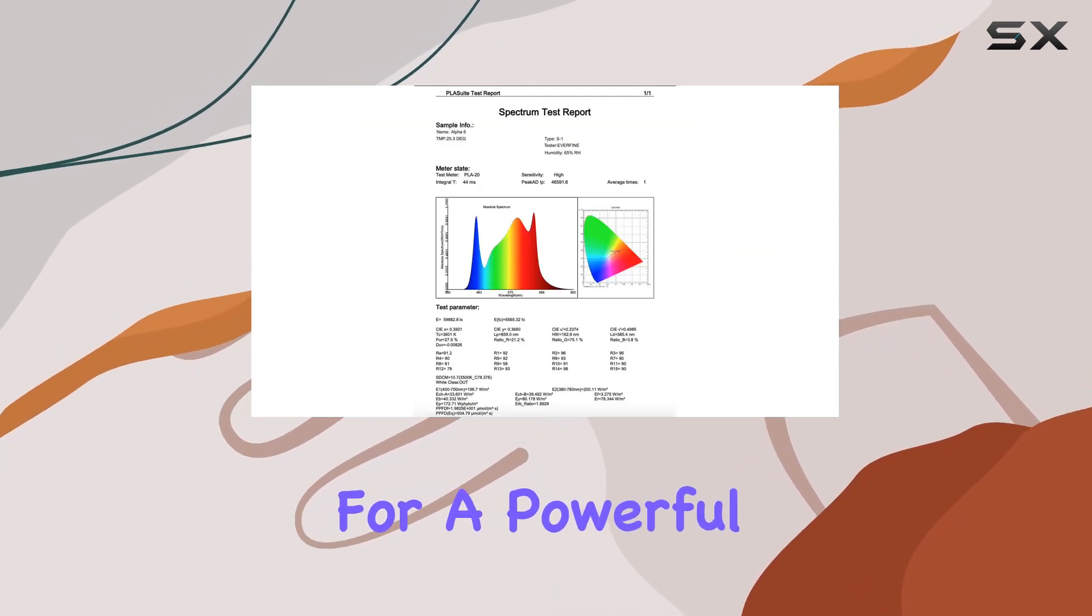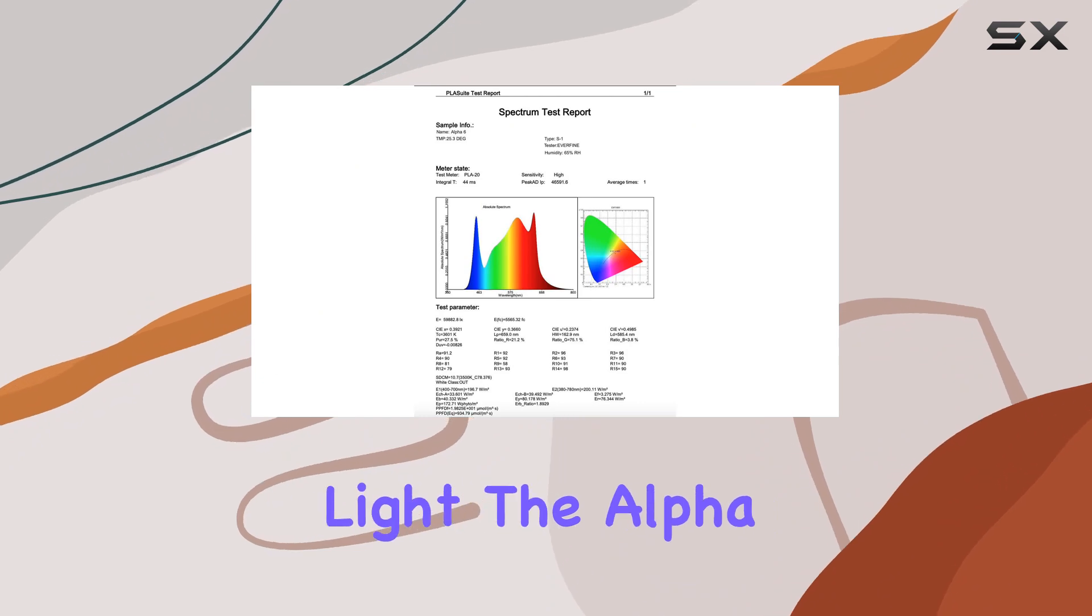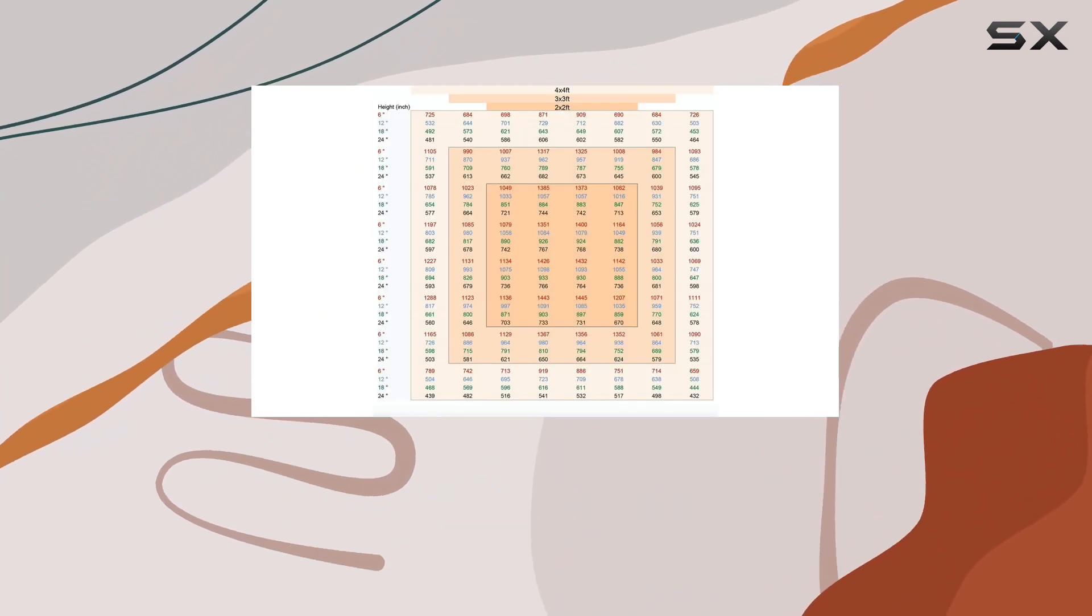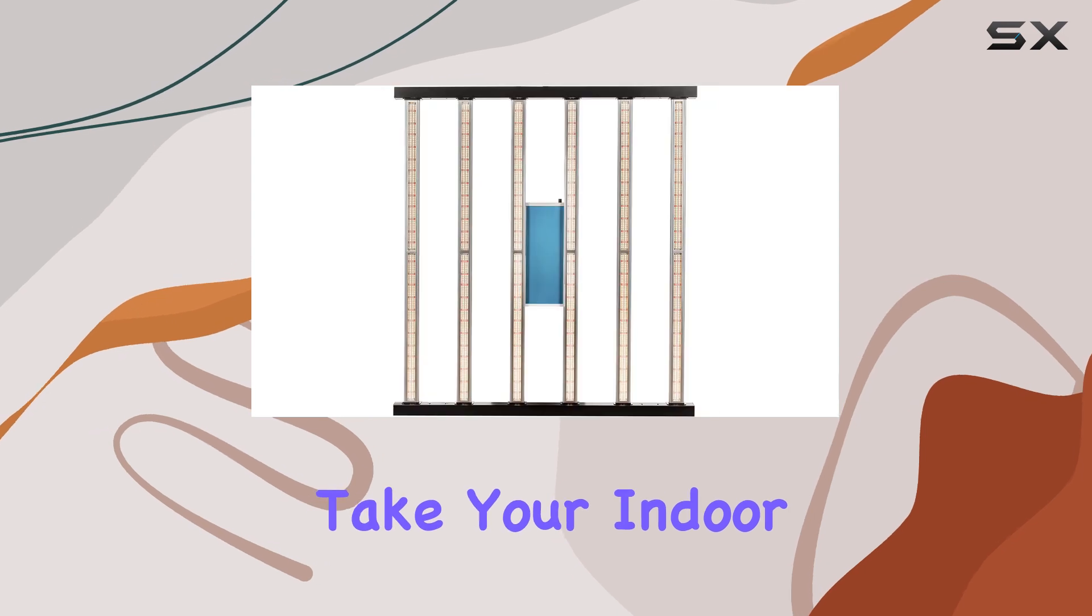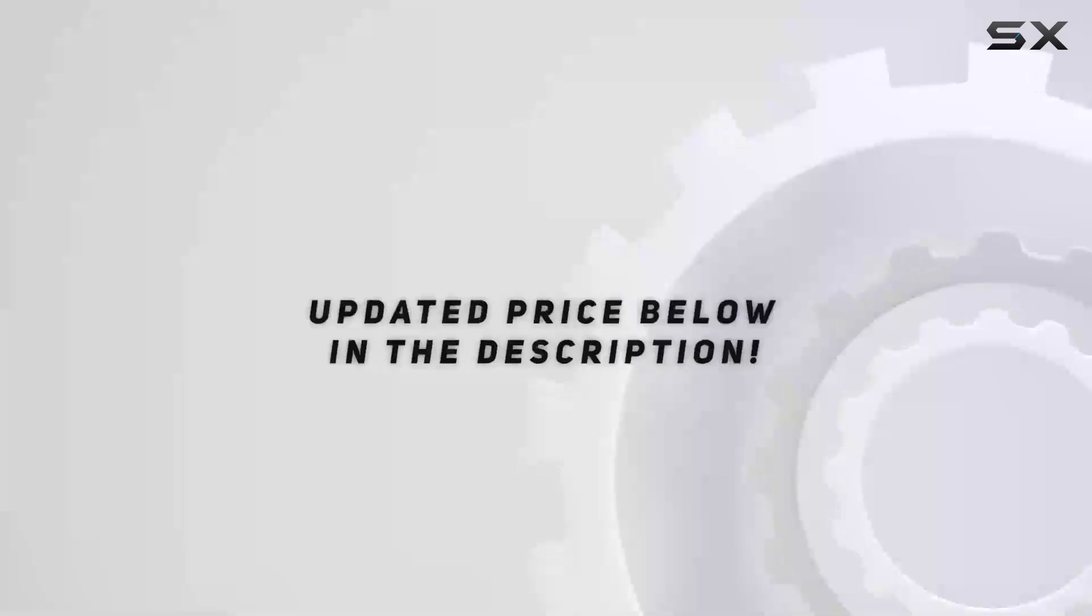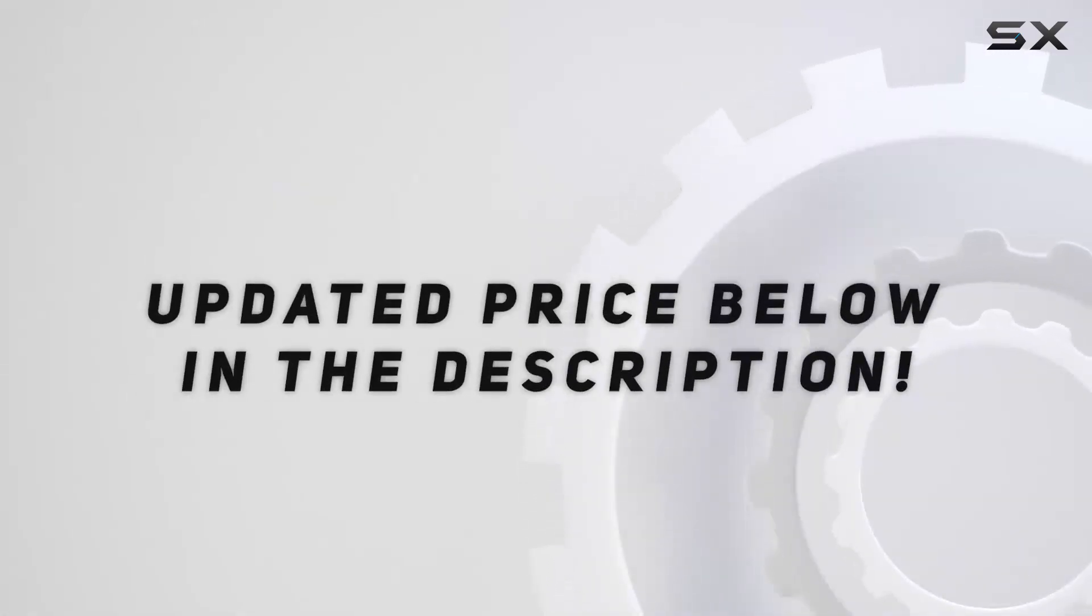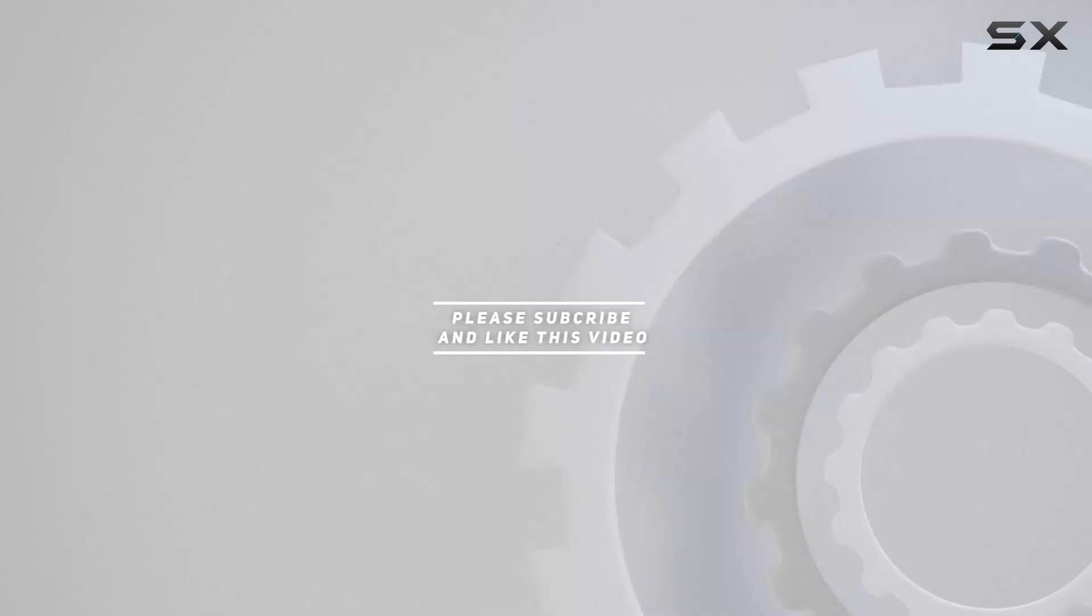If you're looking for a powerful, efficient, and versatile grow light, the Alpha 6 LED bar grow light is an exceptional choice that will help you take your indoor gardening to the next level. Check out the video description for updated price and thank you for watching this video.